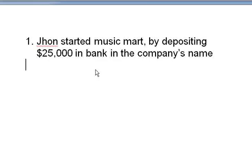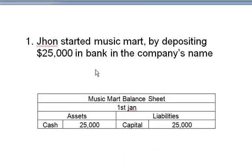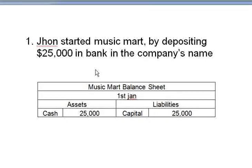The deposit is recorded as follows. The heading is 'Music Mart Balance Sheet.' Each transaction is assumed to occur on one day, so as of January 1st, this is the balance sheet. The twenty-five thousand dollars cash is sitting in the bank, ready for you to do business — it is your asset. So under the assets column we have twenty-five thousand dollars. Similarly, under liabilities, we have twenty-five thousand, which is the amount that Music Mart owes to its owner, John.